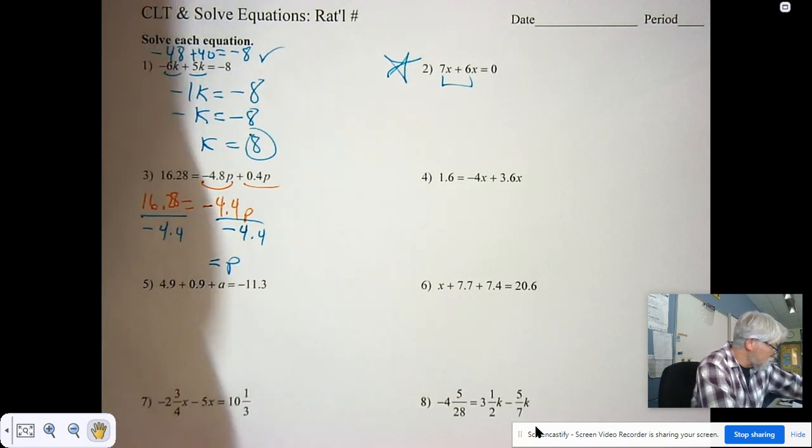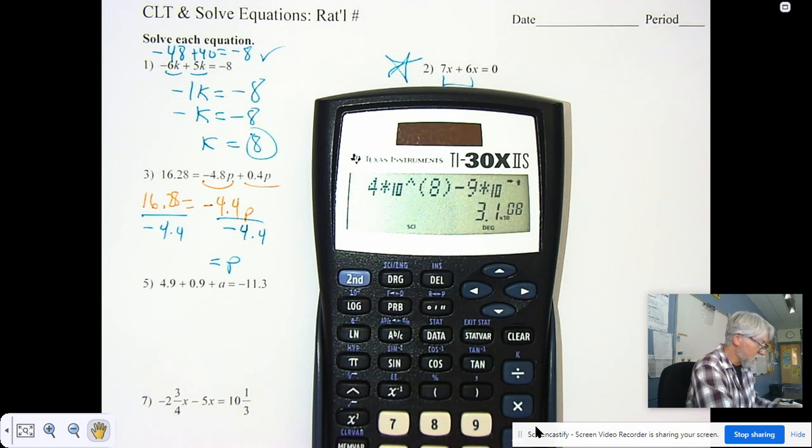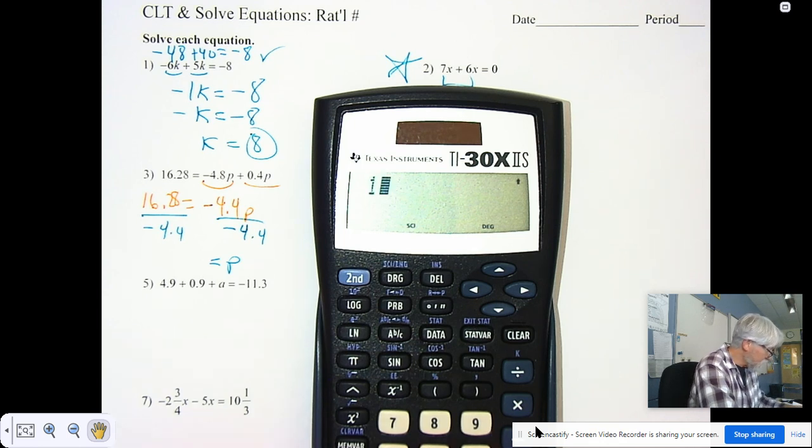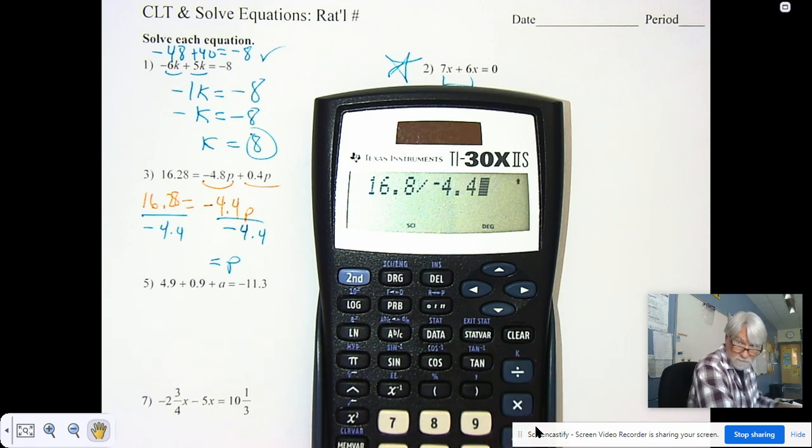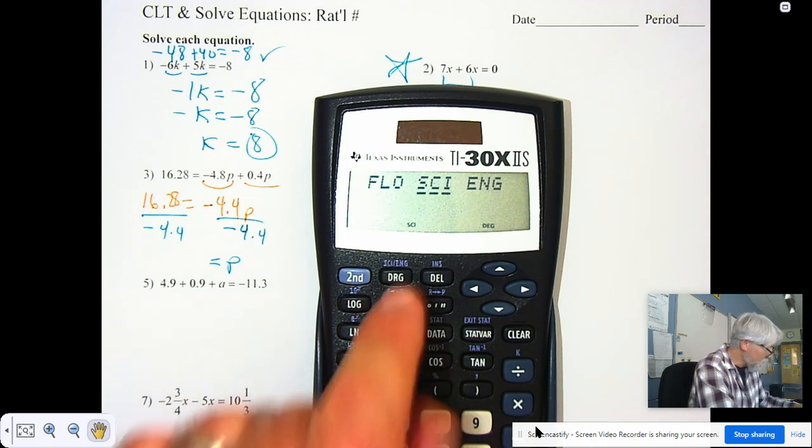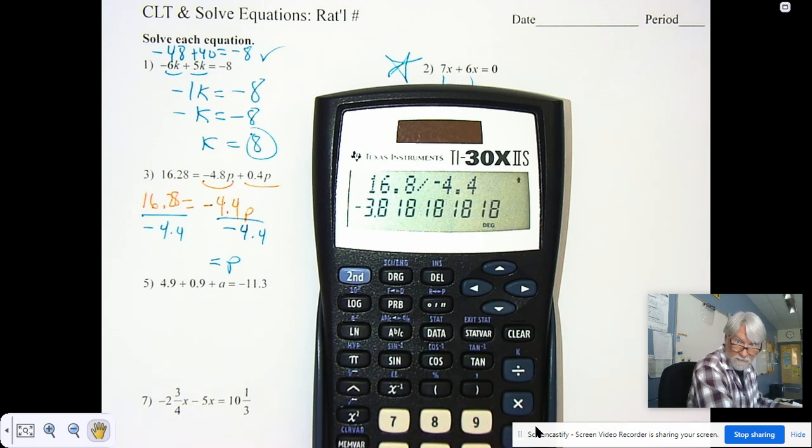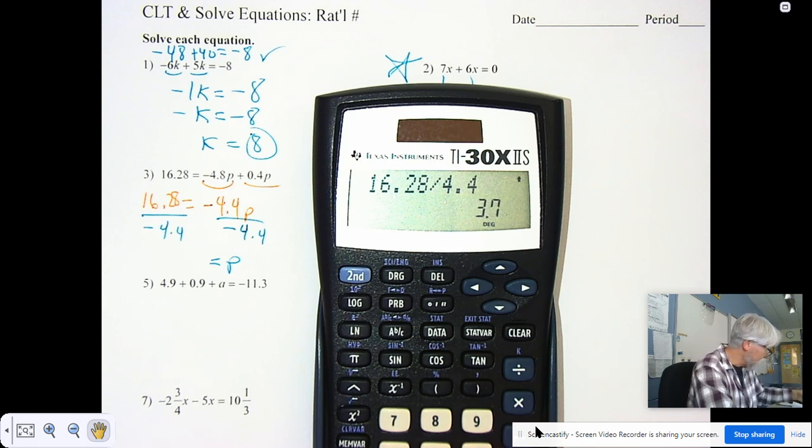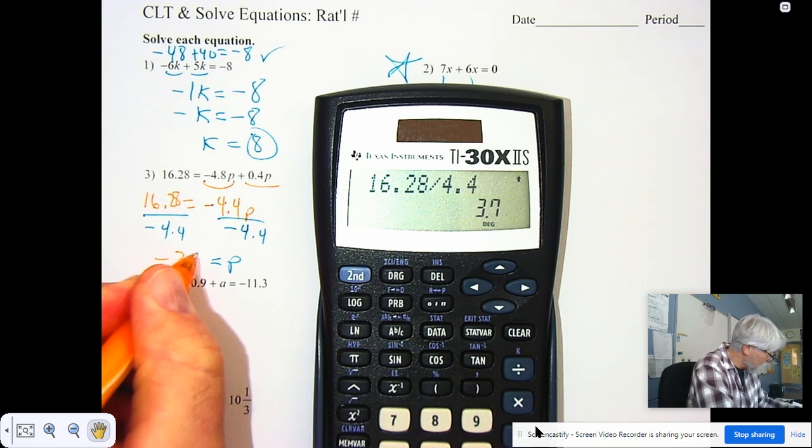Grab your calculator. That's what we're supposed to do. That's an easy way to do our calculations. All right. So we're going to take our 16.8, divide that by our negative 4.4 and we get scientific notation. I don't want scientific notation. I want standard form. So 16, oh, I did it wrong. It was 16.28. Let's clear it. 16.28 divided by 4.4. And that was supposed to be negative, right? So it's going to be negative 3.7.